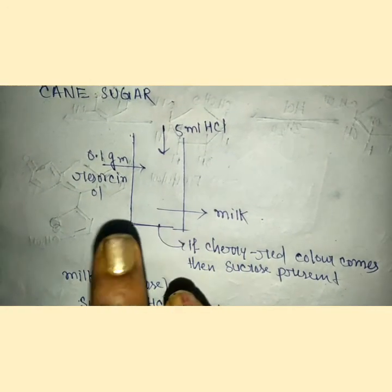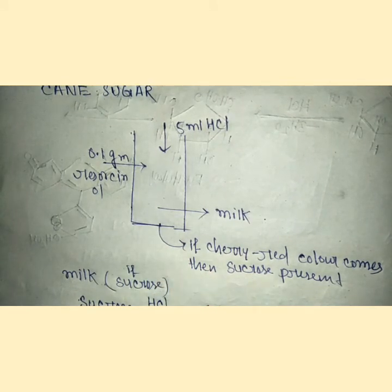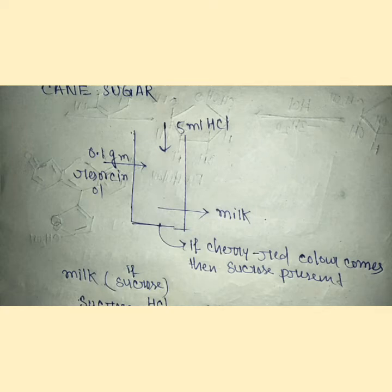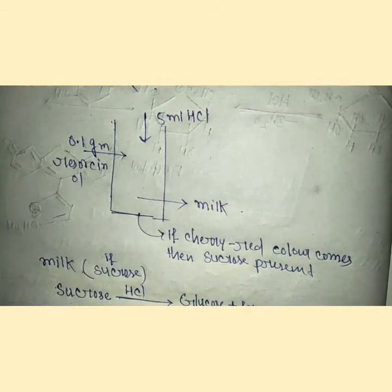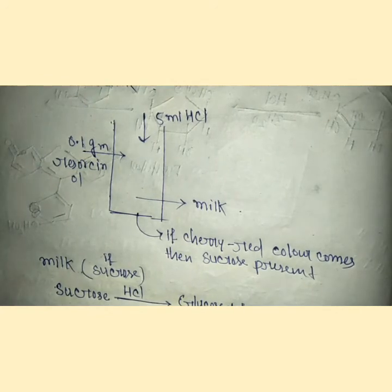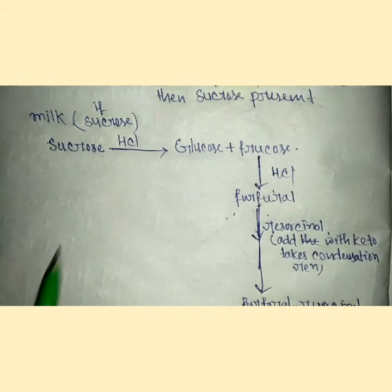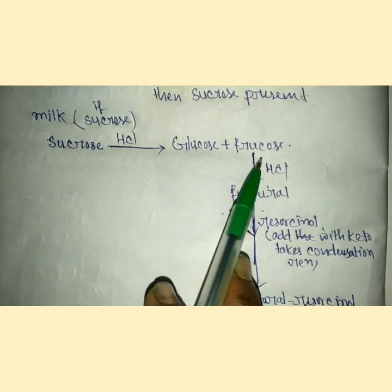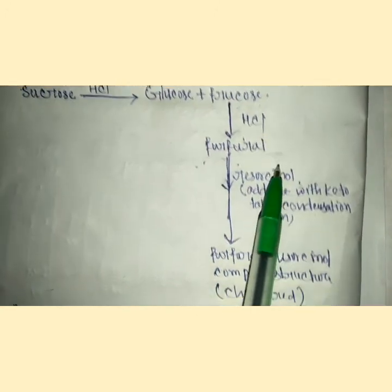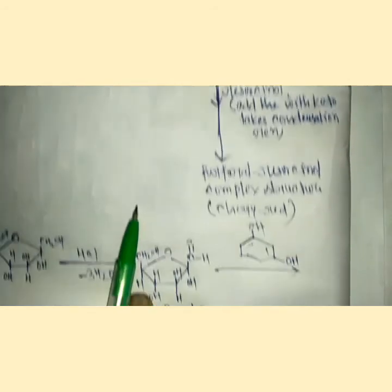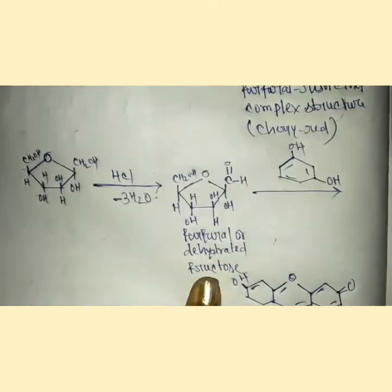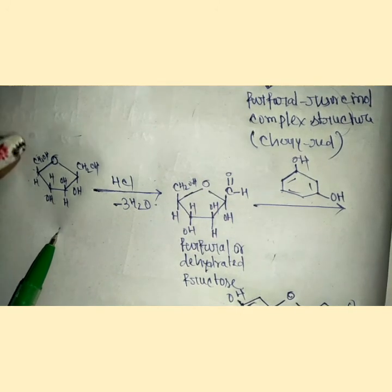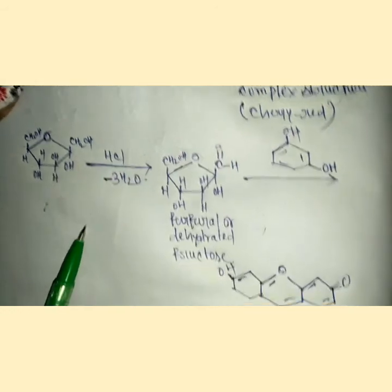I think you people are clear. This is the qualitative test. We take milk and add HCl and resorcinol. If the keto group is present, meaning reducing sugar, then cherry red will come and we can tell that this milk contains adulterant sucrose. This is the mechanism. After adding HCl, fructose and glucose are produced. Fructose responds in this type of test and rapidly breaks down into furfural. Furfural and resorcinol make a complex that gives cherry red color.